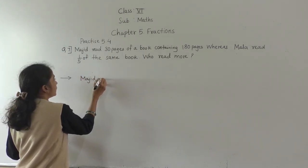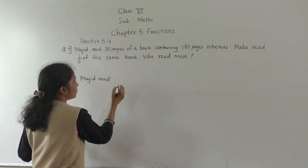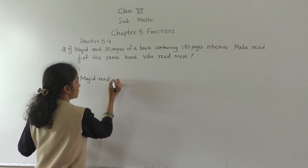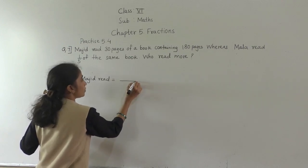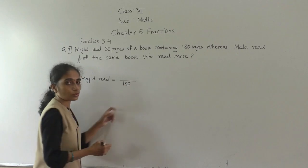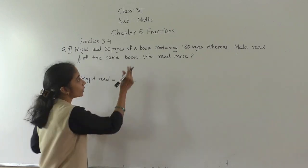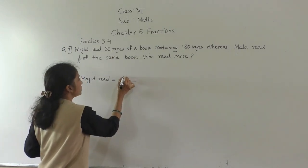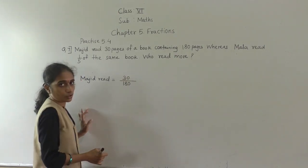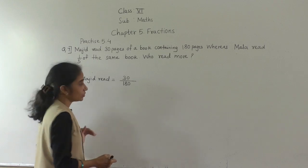Majid read 30 pages of a book containing 180 pages — so total pages are 180 and from that Majid read 30 pages.